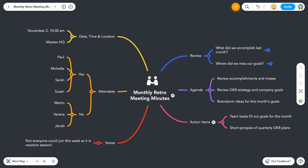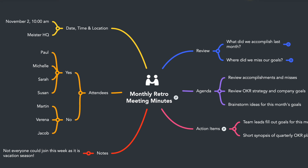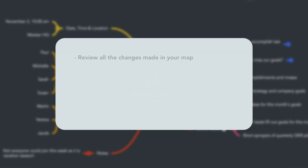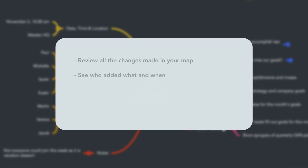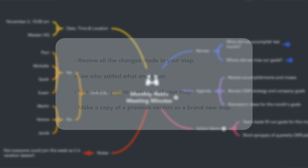Hello and welcome to MindMeister. In this tutorial, I'll show you how to use versions. This feature enables you to review all the changes made to your map in chronological order, see who added what and when, revert to a previous version of your map, or make a copy of a previous version as a brand new map.